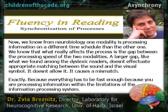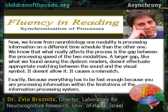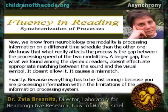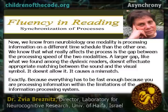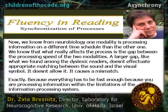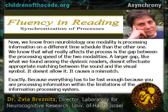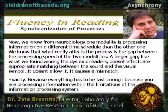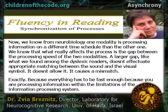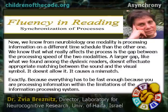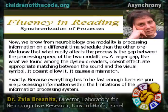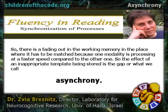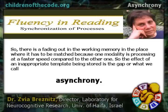We know from neurobiology that one modality processes information on a different time scale than the other. What really affects the process is the gap between the processing speeds of the two modalities. A larger gap, like what we found among dyslexic readers, doesn't allow an appropriate matching between the sound and the visual symbol — it causes a mismatch. Everything has to be fast enough because we are processing information within the limitations of the information processing system. There is a fading out in working memory, the place where information has to be matched together, because one modality is processed at a faster speed compared to the other.